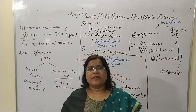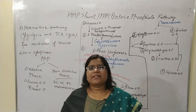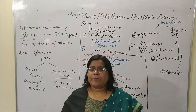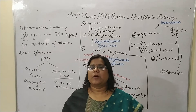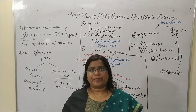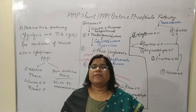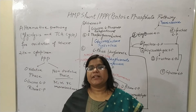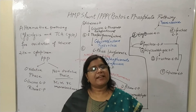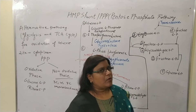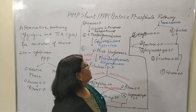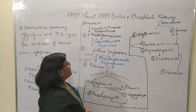This pathway can generate every type: 3-carbon monosaccharides like glyceraldehyde 3-phosphate, 4-carbon monosaccharides like erythrose 4-phosphate, and 5-carbon monosaccharides like ribose and ribulose 5-phosphate, which are essential for DNA and RNA synthesis. In this session, we will discuss the HMP pathway, its significance, and glucose 6-phosphate dehydrogenase deficiency.